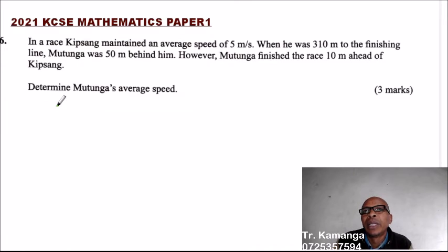Question number six. We are told in a race, Kipsang maintained an average speed of 5 meters per second. When he was 310 to the finishing line, Mutunga was 50 meters behind him. However, Mutunga finished the race 10 minutes ahead of Kipsang.